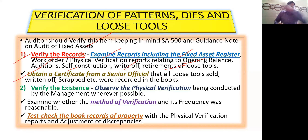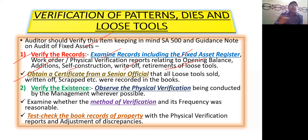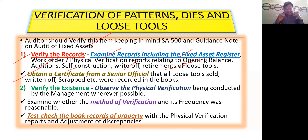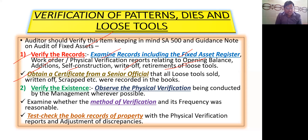The auditor should obtain a certificate from a senior official that all loose tools sold, written off, scrapped, etc. were recorded in the books. If any loose tools are sold, written off, or scrapped, then the entry should be recorded in the books. All recordings should be there. That is the first point — verify the records.